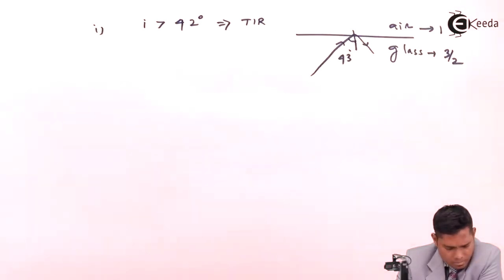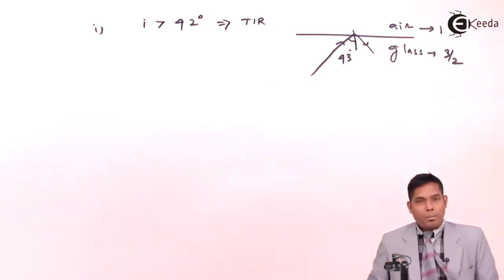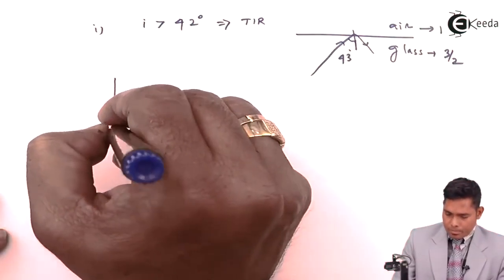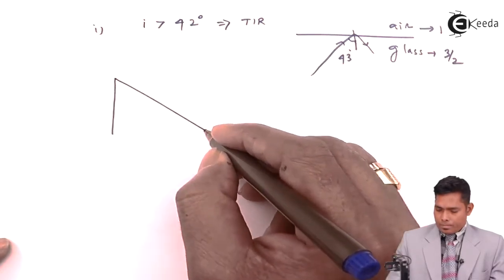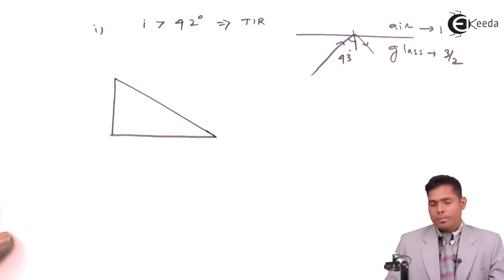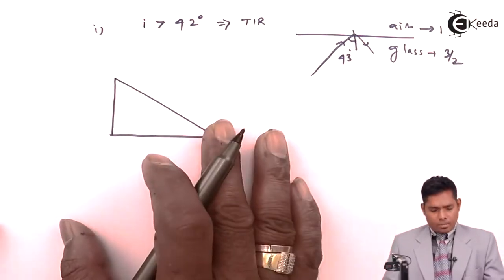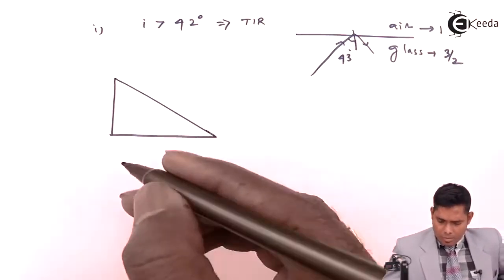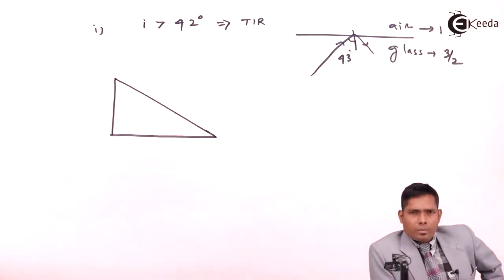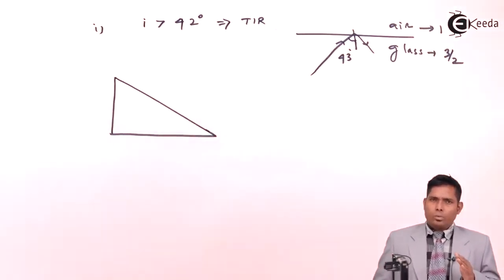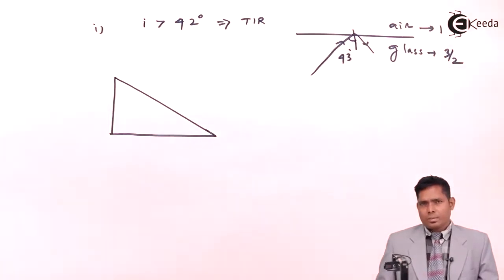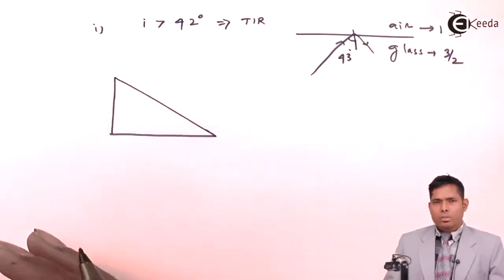Isosceles right-angle prisms are used to turn the ray through 90 degrees or 180 degrees — this is one of the applications of total internal reflection. We will now consider a glass prism. A prism is formed when light passes through two inclined planes; we will discuss prisms in more detail later.